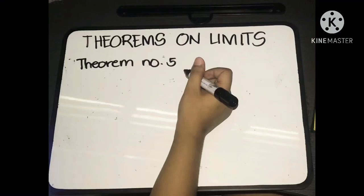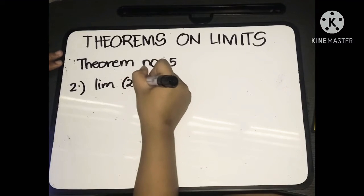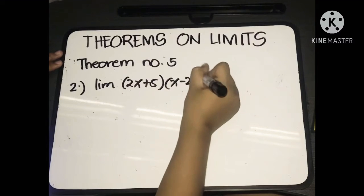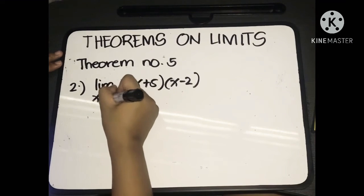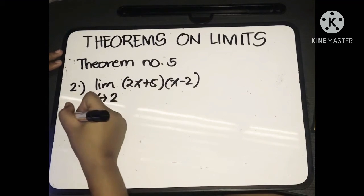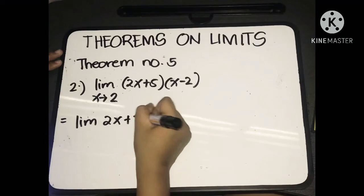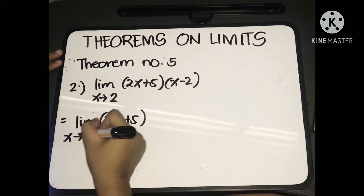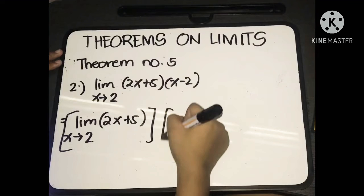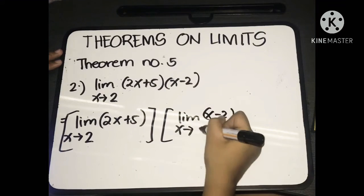Let's have the second example: the limit of (2x + 5) multiplied by (x − 2) as x approaches 2. We distribute the limit over multiplication, so we'll have the limit of (2x + 5) as x approaches 2, multiplied by the limit of (x − 2) as x approaches 2.